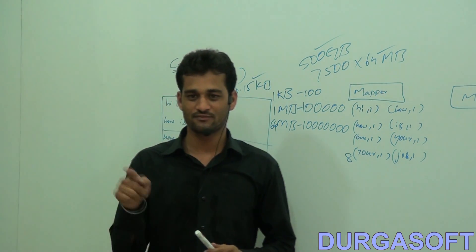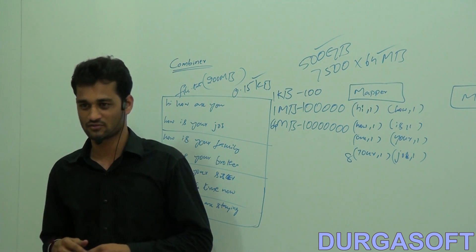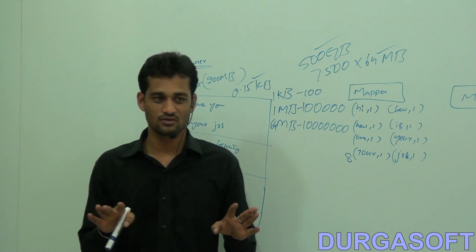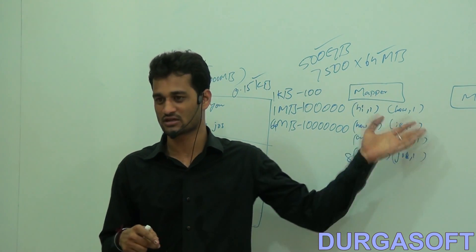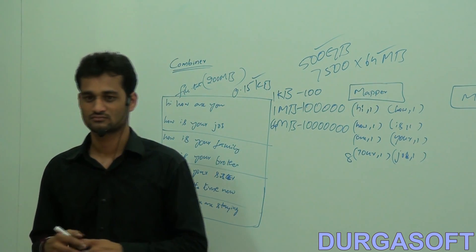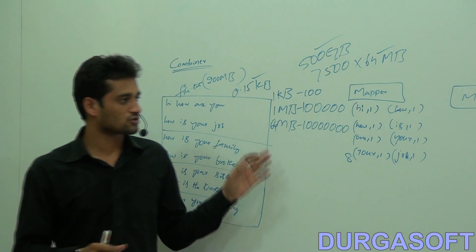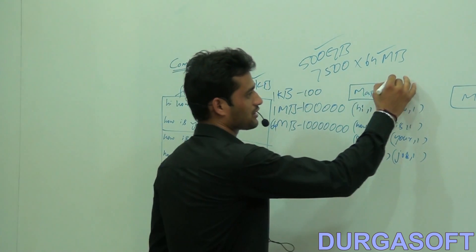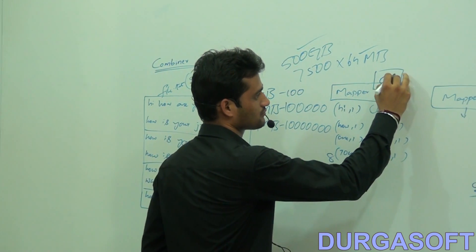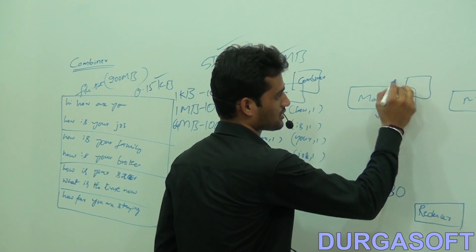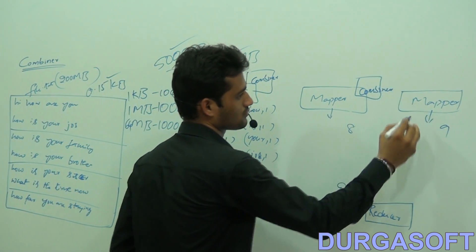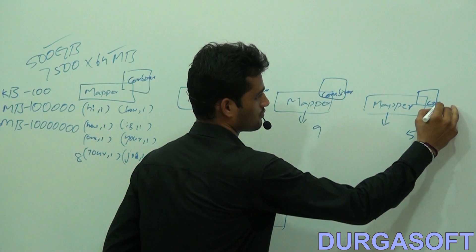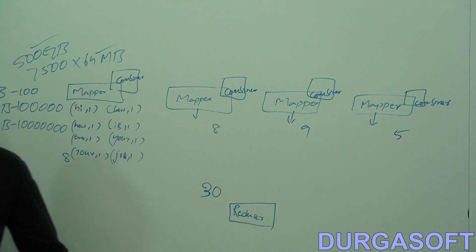How many mappers are there? That many combiners will be there. Each combiner works on its individual mapper output. Once all your combiners have processed their data, your reducer will combine the outputs from all the combiners. To decrease network traffic and increase application performance, we use combiners — four mappers means four combiners.